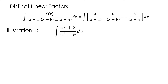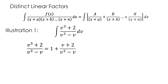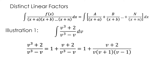Let's have Illustration 1. If we want to integrate (v³ + 2) / (v³ − v) dv, when integrating a rational fraction we must ensure it is a proper fraction. Here the degree of the numerator equals the degree of the denominator, so we divide v³ + 2 by v³ − v, giving 1 plus (v + 2)/(v³ − v). We can factor v³ − v as v(v + 1)(v − 1). Notice that v, v + 1, and v − 1 are distinct linear factors.